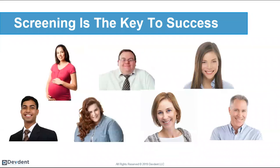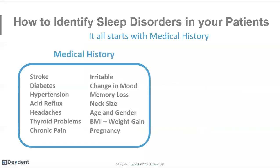Screening is the key to success. There are no more stereotypes — any patient in your practice should be screened. First, we look at their medical history for conditions like stroke, diabetes, and hypertension. We look for comorbidities and signs and symptoms. Most of you already have these questions on your medical history — you're already asking about hypertension. You may not be asking about acid reflux, mood, depression, or memory loss, but most of these things are in your wheelhouse.